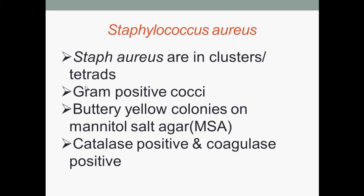Staphylococcus aureus are catalase positive. The catalase test is performed to see if a microbe has the enzyme catalase, which is capable of degrading hydrogen peroxide, which is a very dangerous chemical. They are also coagulase positive. The coagulase test is done to identify whether an organism produces the coenzyme coagulase, which causes the fibrin of blood plasma to clot.